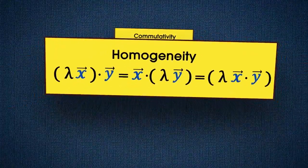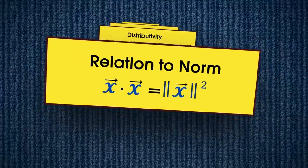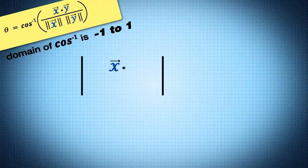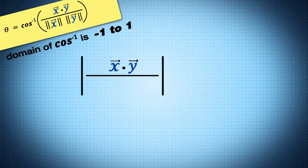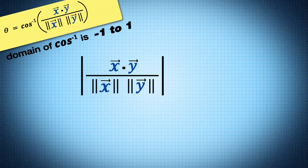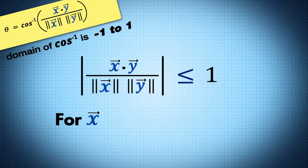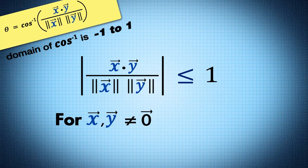Now that we have a few dot product properties under our belt, we can go back to proving that the absolute value of the dot product of x and y divided by the norm of x and norm of y is less than or equal to 1 for x and y not equal to 0.